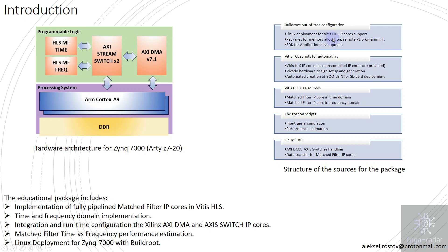The package also includes Vitis scripts for automating projects such as Vitis HLS, Vivado project creation, and bootloader generation for SD card deployment. Vitis HLS C++ sources are provided for both matched filter implementations in time and frequency domain, along with a Python script for creating input signals and performance estimation of the matched filter output.